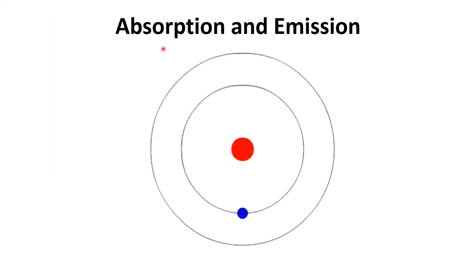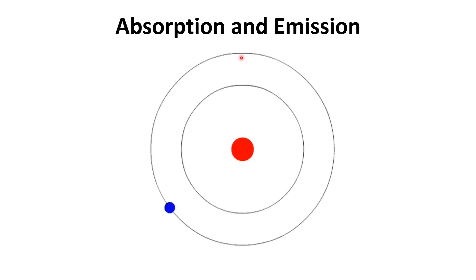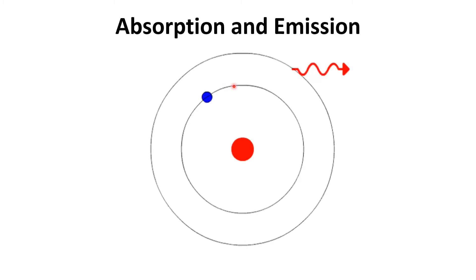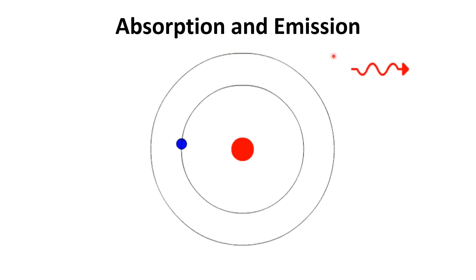In the previous video on the electromagnetic spectrum, I explained what absorption and emission are. In an atom, there is a nucleus in the center and an electron revolving around it in a certain orbit. When this electron absorbs electromagnetic radiation, it goes from a lower energy level to a higher energy level — this is called an electronic transition, going from the ground state to the excited state. When the electron comes back to the ground state, there is an electronic transition with emission of electromagnetic radiation. So absorption is when the electron absorbs electromagnetic radiation and goes from ground state to excited state, and emission is when the electron returns to the ground state by emitting electromagnetic radiation.